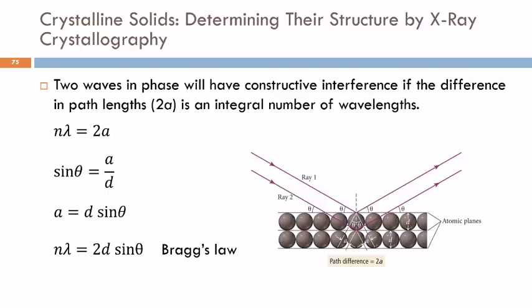If it is not an integral number—one, two, three, four wavelengths—then you'll get destructive interference. So what they do is they adjust the angle until you get constructive interference. So you just adjust the angle of the x-rays until the spots get as bright as they can get.